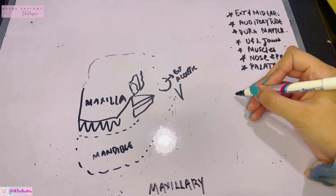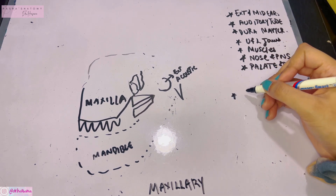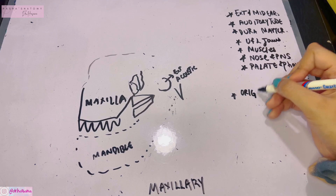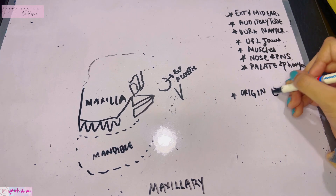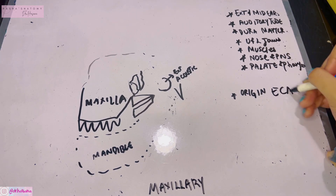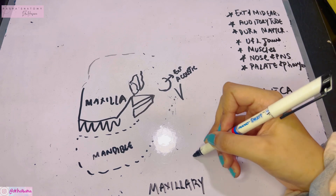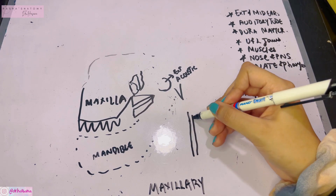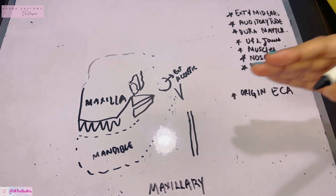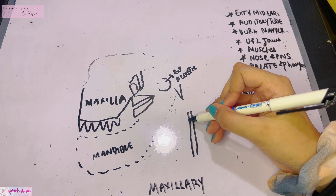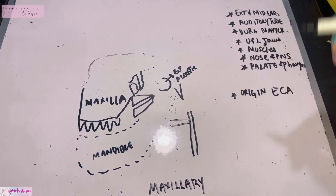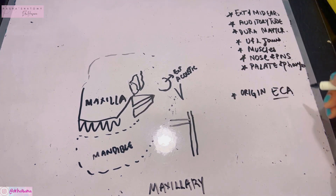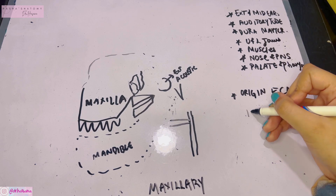Always remember every structure in the form of bullet points beginning with origin and ending with termination. The origin of the maxillary artery is from the external carotid artery. The external carotid artery comes from the neck, emerges, and gives a branch called the maxillary artery, which runs horizontally from it.